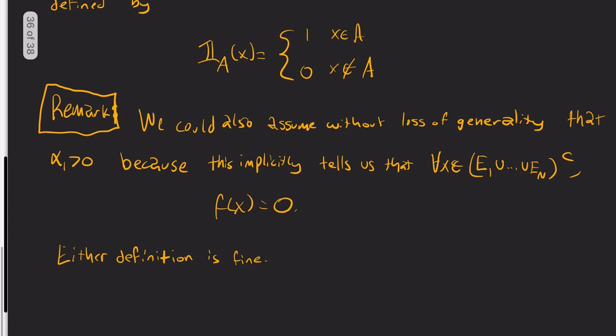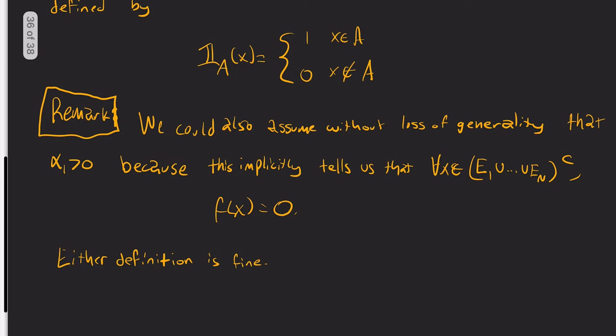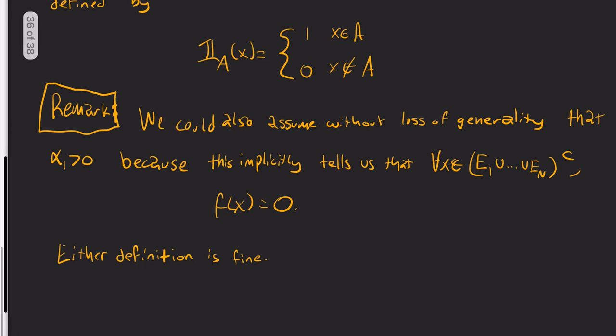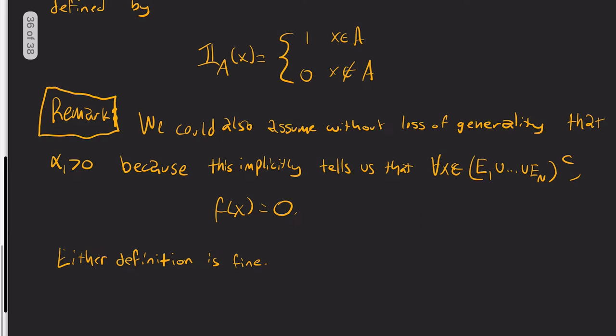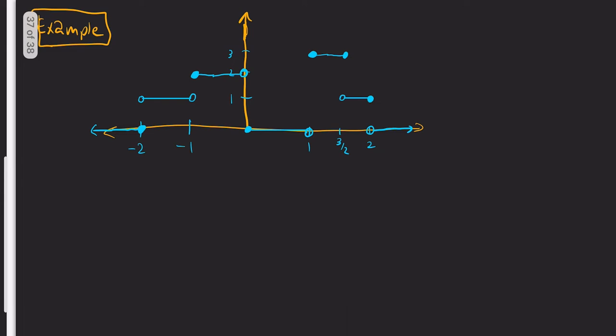Note also, I said that α is greater than or equal to 0. I could have also said α is greater than 0, because implicitly, if you wanted to include an α_0, then for any x in the complement of the union of all those sets, it's equal to 0. So you could write it as 0 times the indicator of E_0. Whatever definition you prefer is fine - they're equivalent definitions.